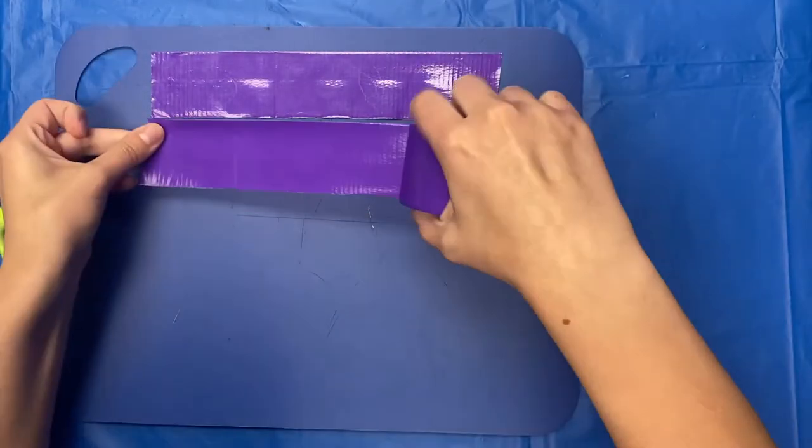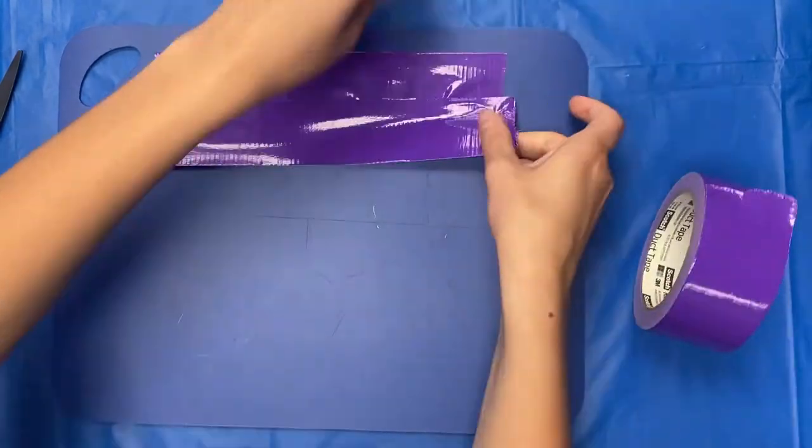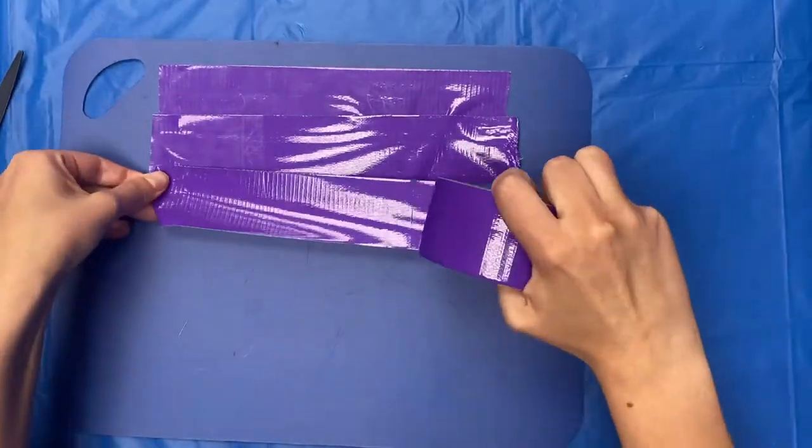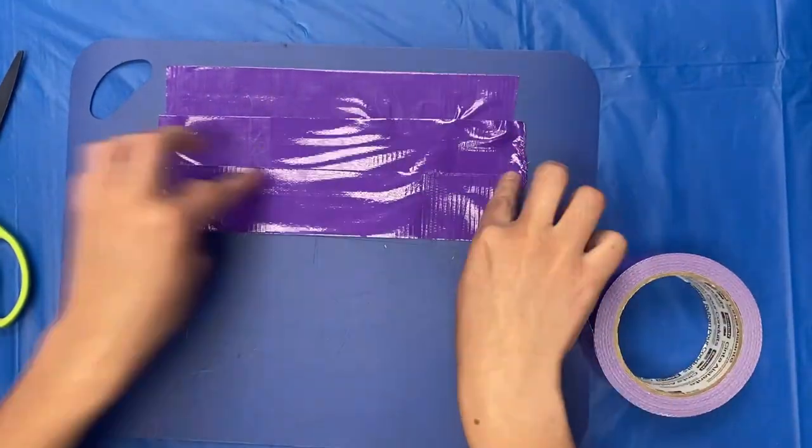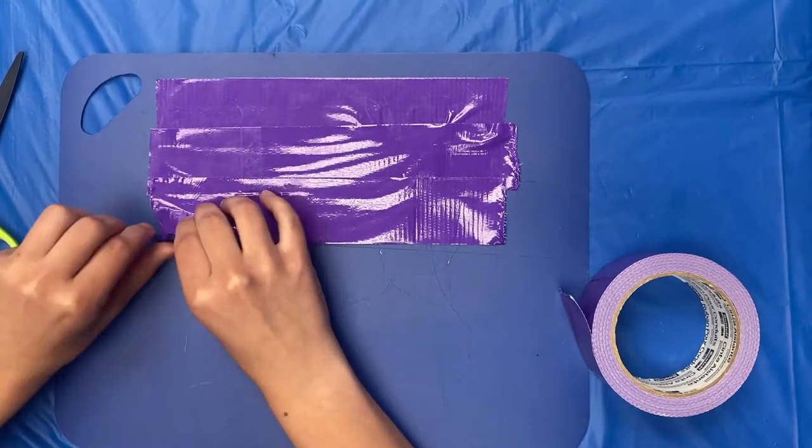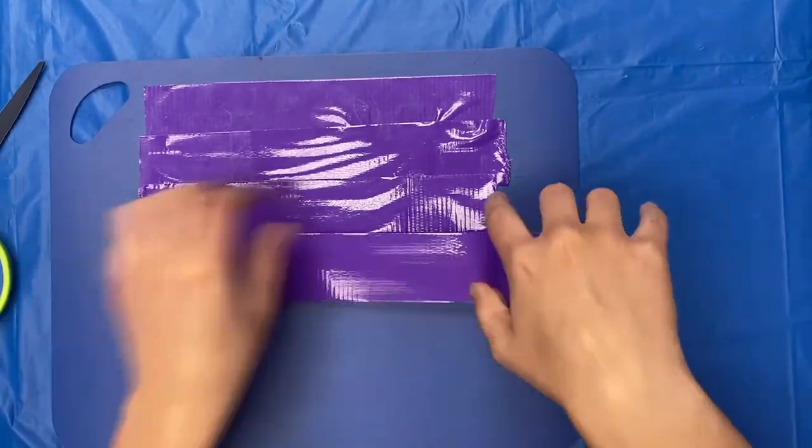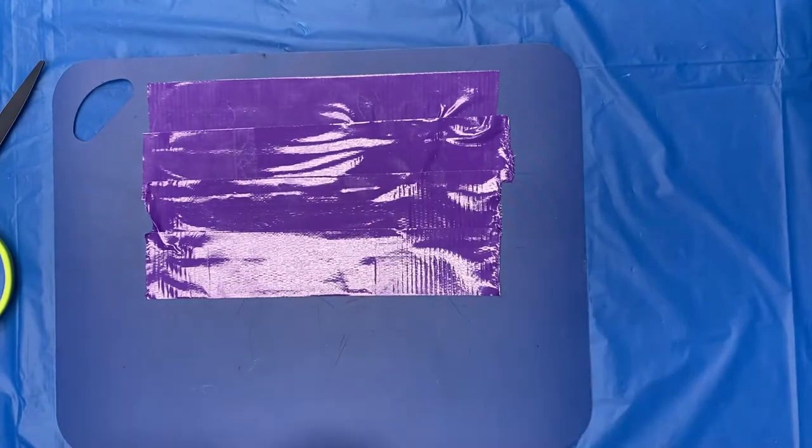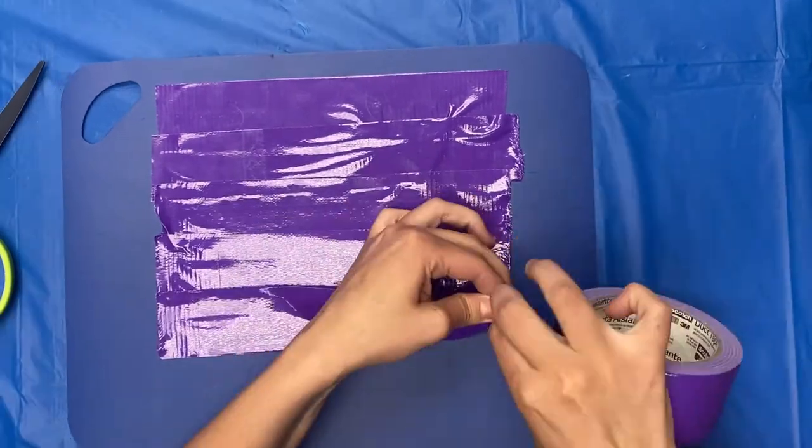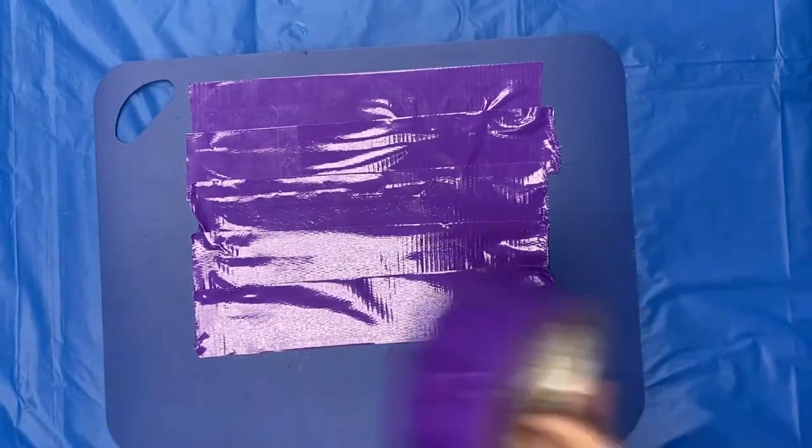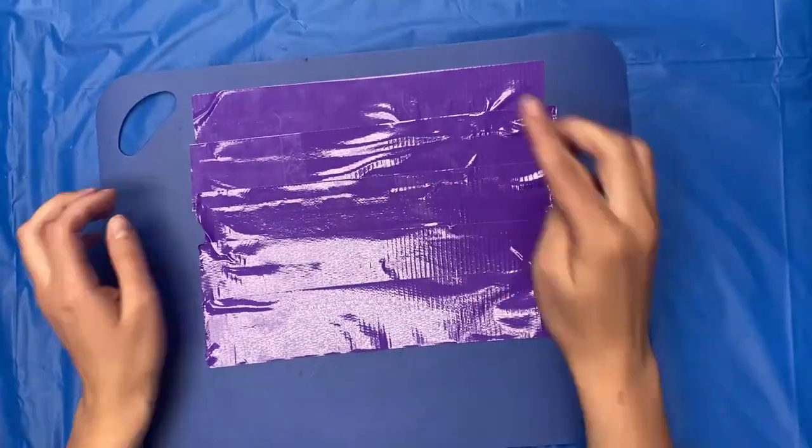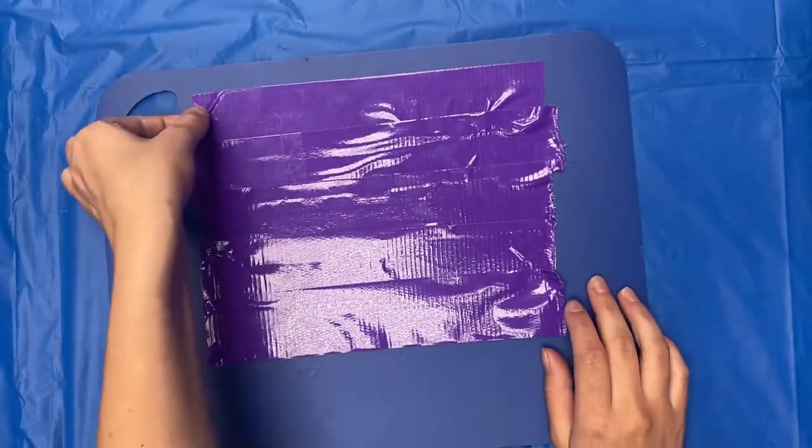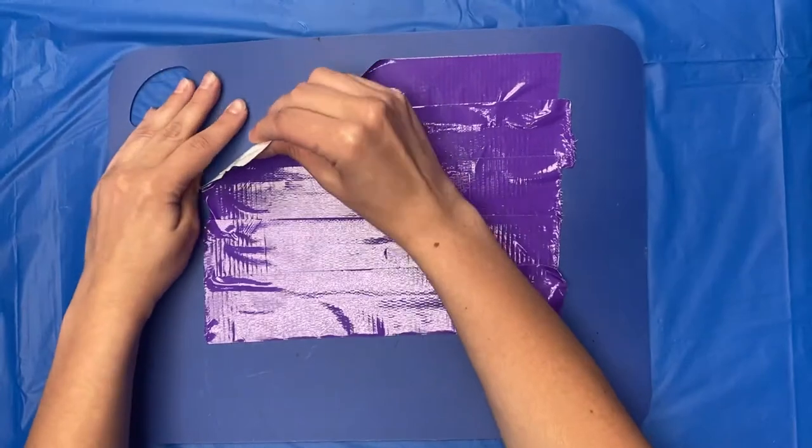Cut five nine inch strips of duct tape and begin to lay them down with a slight overlap. Peel off the tape and flip it over.